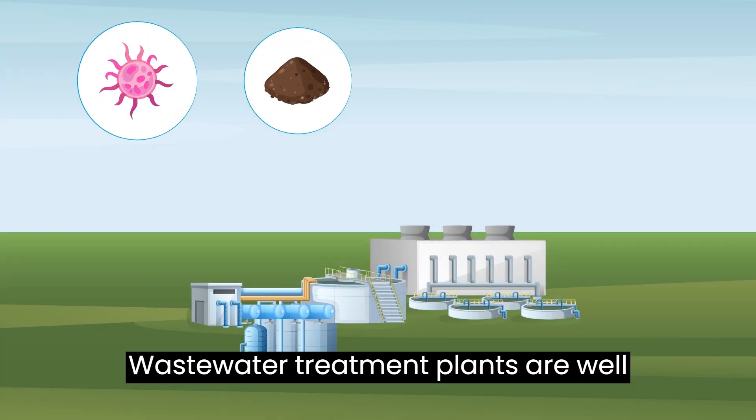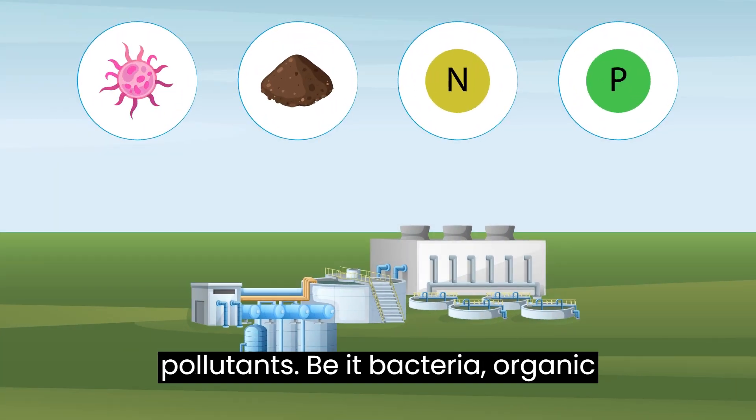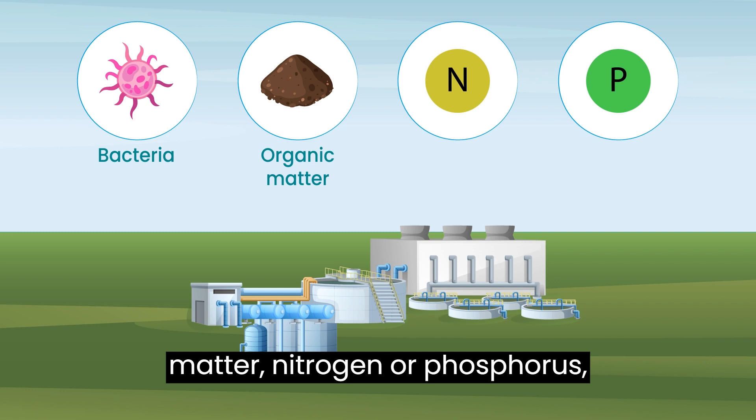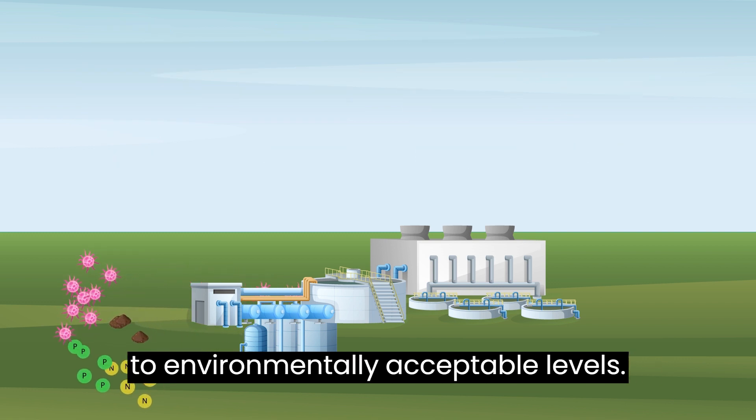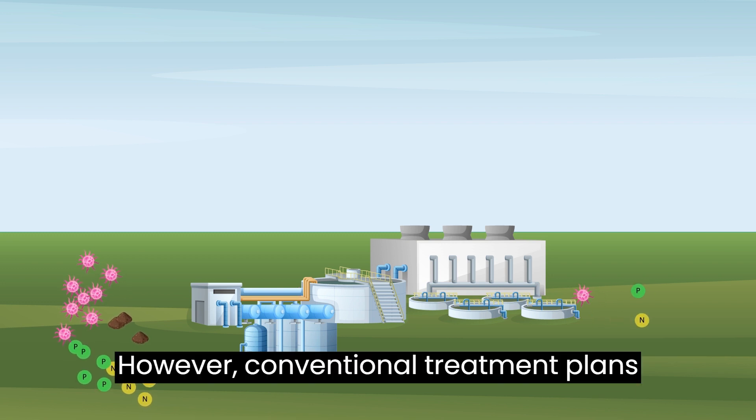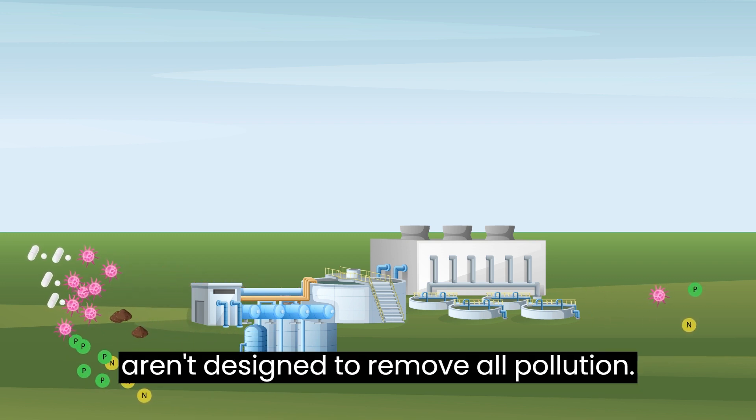Wastewater treatment plants are well suited to deal with many kinds of pollutants, be it bacteria, organic matter, nitrogen or phosphorus. Treatment plants can usually reduce them to environmentally acceptable levels. However, conventional treatment plants aren't designed to remove all pollution.